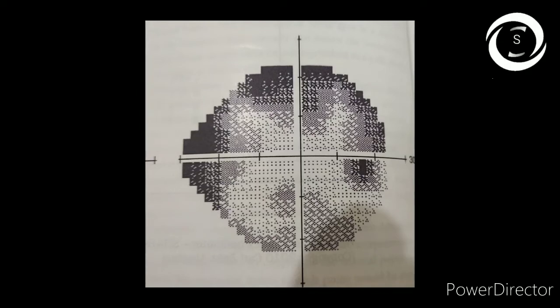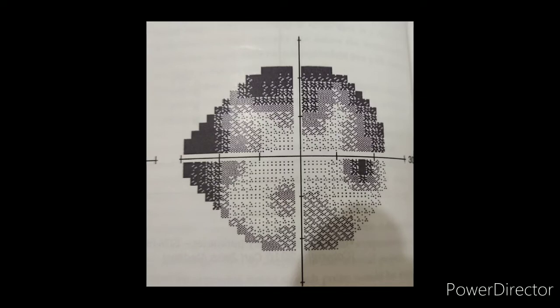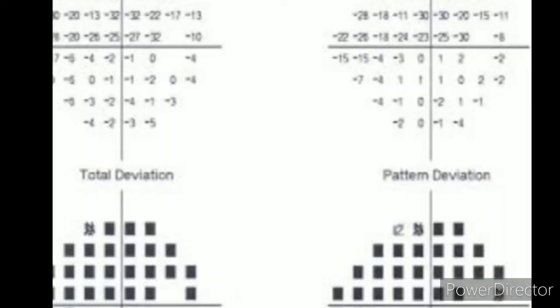Grayscale and numeric display already discussed in details. So now come to total deviation. It is difference of patient sensitivities from age-matched population. For example, if in numeric one point is 30, recorded 30 decibel, and age matched is 26 decibel, on total deviation you will get minus four and a dark box. So if in a total deviation grayscale most points are black, these assumptions can be wrong by possibility of less than half percent.